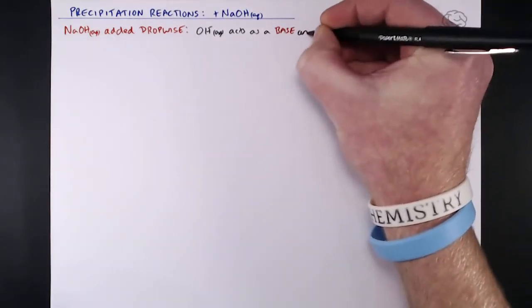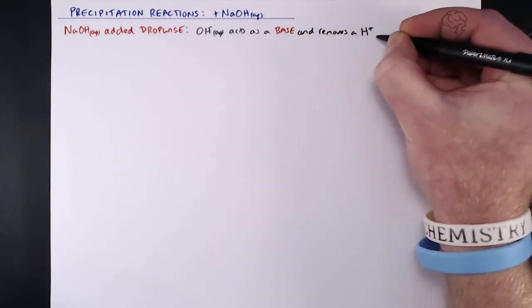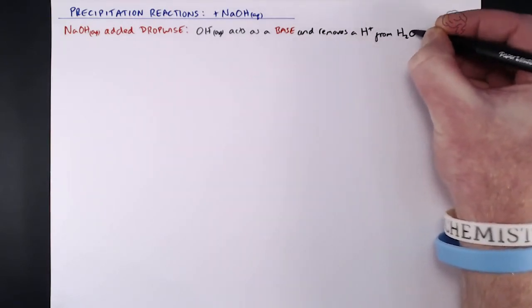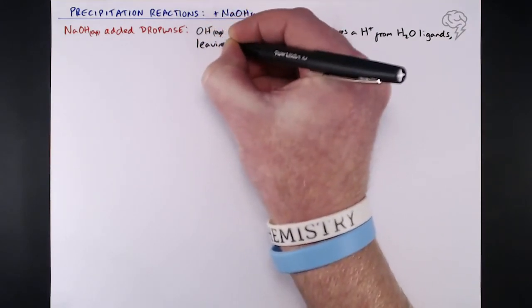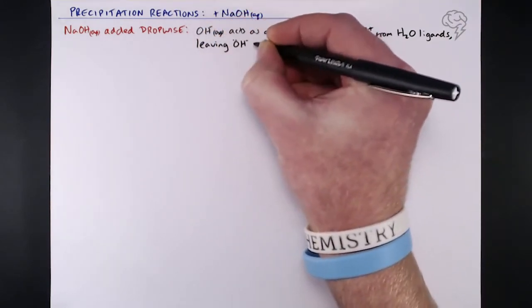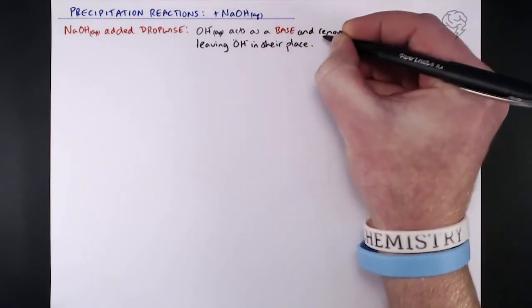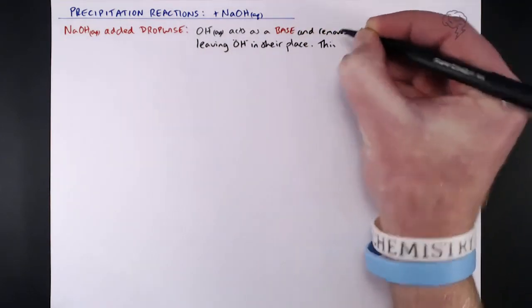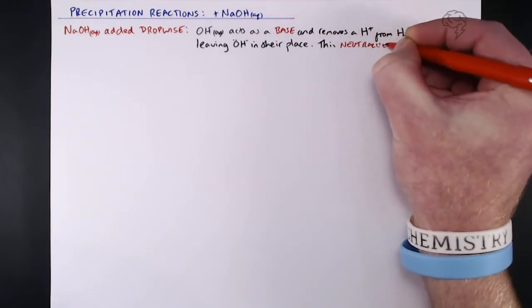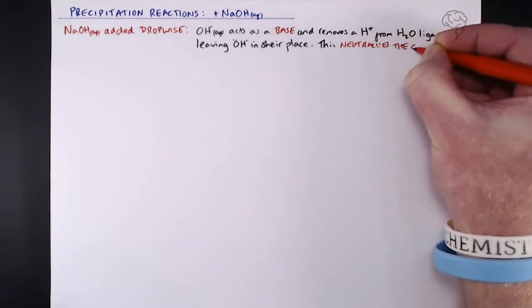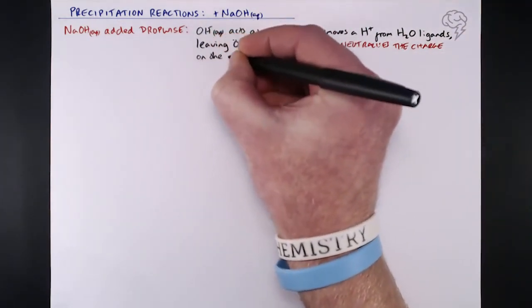A base means they're accepting hydrogen ions. Where do those hydrogen ions come from? It's the H₂O ligands arranged around that aqueous complex. So they take an H⁺ away from the H₂O, leaving an OH⁻ in its place. Depending on the charge of the ion, that really dictates how many OH⁻ ions are left there. But essentially for all of these, they neutralize the charge on the complex ion, forming a precipitate.